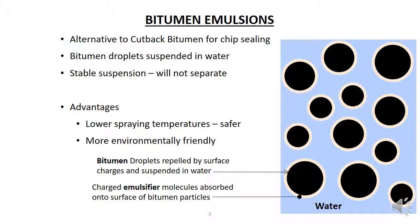These droplets are in the order of several micrometers in diameter and cannot be seen by the human eye. They are too small to settle by themselves, and so they are suspended in the water. If left to stand, the bitumen and water will not separate out, so the mix is a stable suspension.